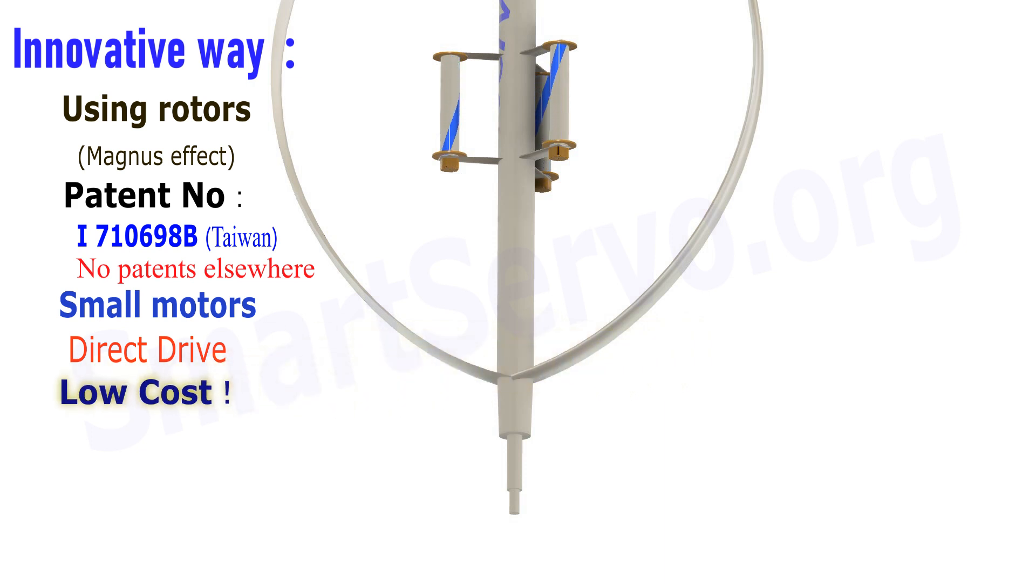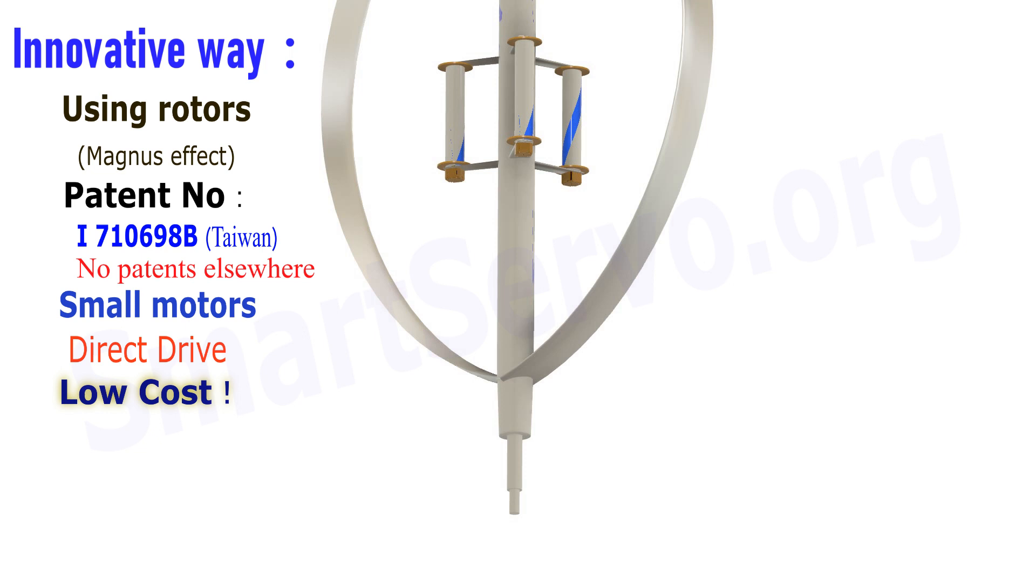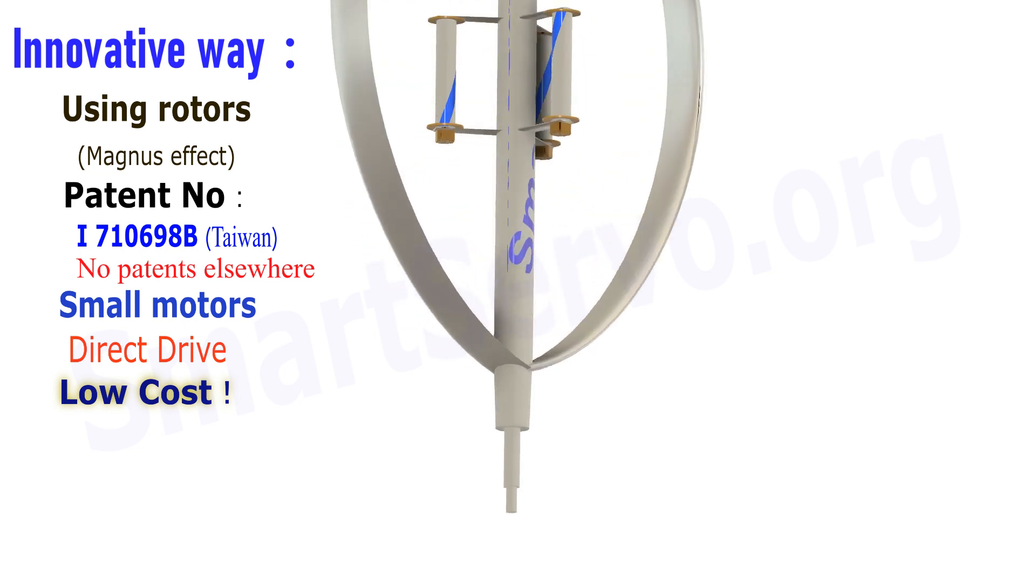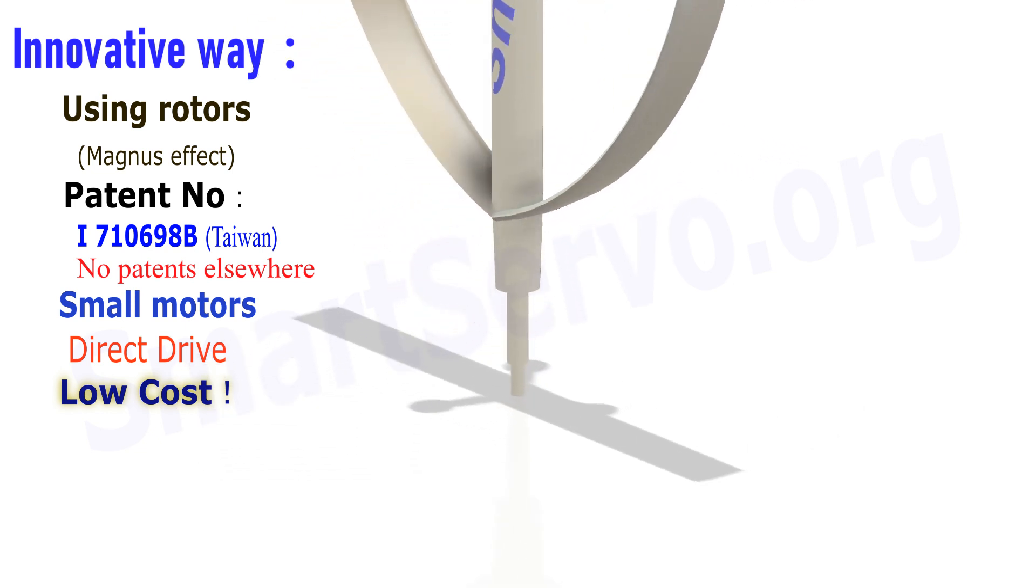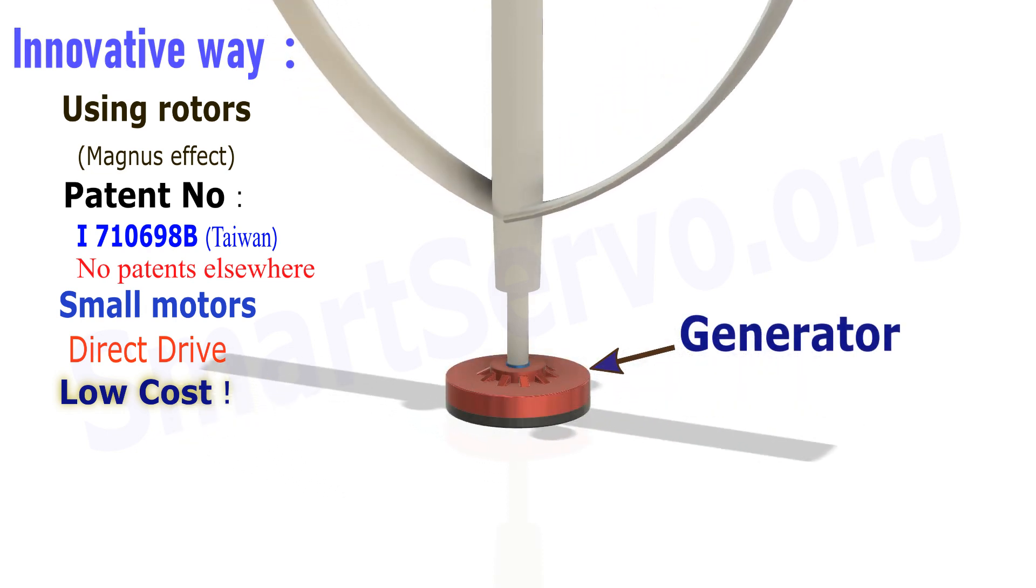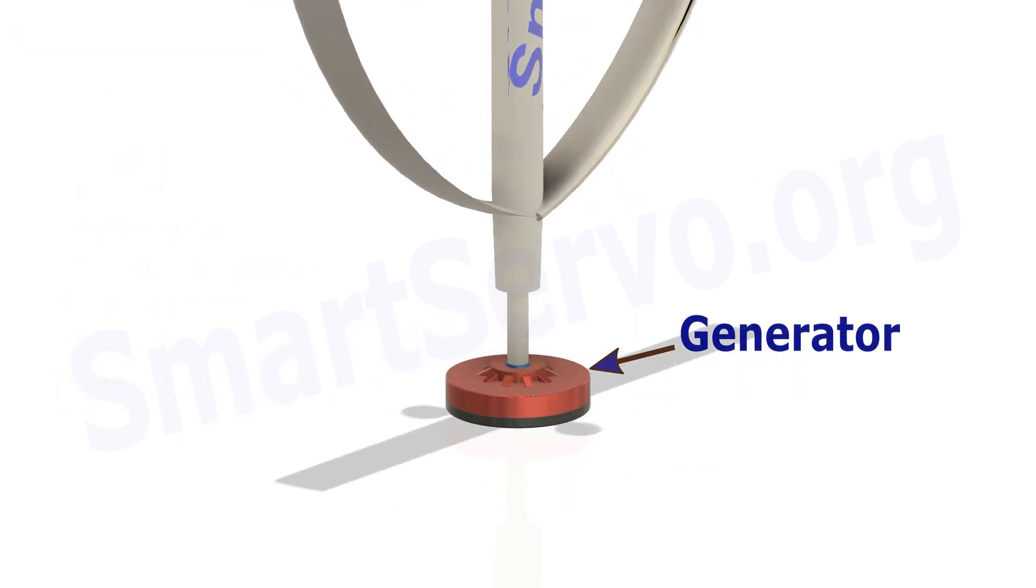When the rotor rotates in the wind, the wind turbine is driven to rotate through the Magnus effect, and when the rotation speed is fast enough, it can be used to generate electricity. Then make the experimental device.